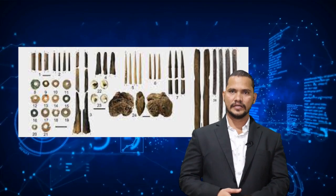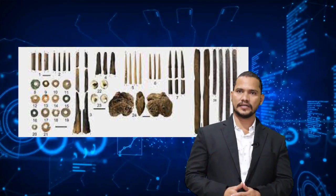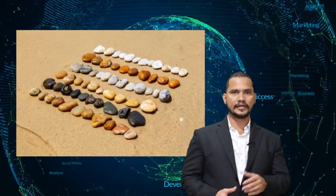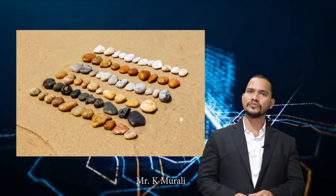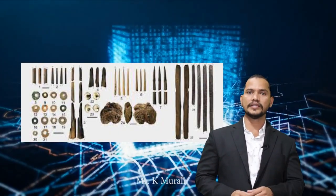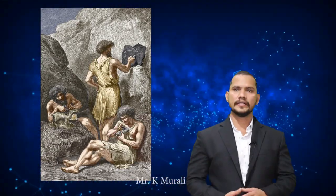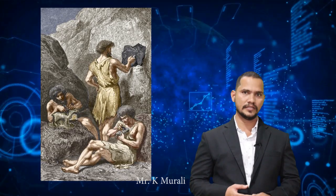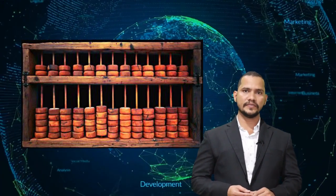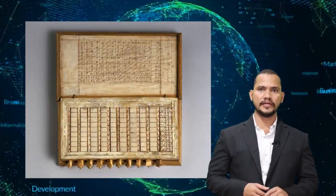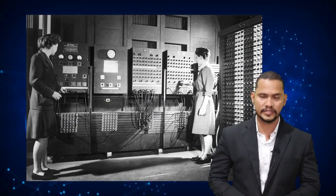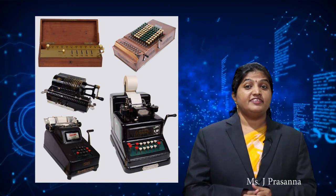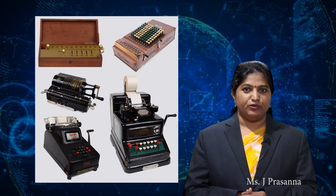The story of computers started long ago for counting and calculating. Early man used to count with pebbles, bones of animals, making lines on walls, etc. But he could not count big numbers with these methods. So he discovered the Abacus for counting, Napier's bones for multiplication, and so on. Finally, the electronic calculating device — the computer — was invented. Let us know about the evolution of computers.